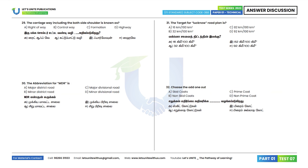29th question: The carriageway including both side shoulders is known as formation. Option C. 30th question: The abbreviation for MDR is Major District Road. Option E — this is the correct answer.